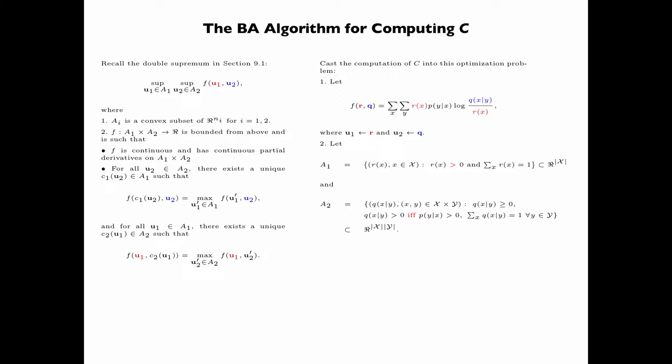And A2 be the set of all reverse transition matrix Q under consideration. That is Q(x given y) greater than or equal to 0 for all x and y, Q(x given y) greater than 0 if and only if P(y given x) greater than 0, and summation over x of Q(x given y) equals 1 for all y, where A2 is a subset of the Euclidean space with dimension equal to the size of alphabet X times the size of alphabet Y.